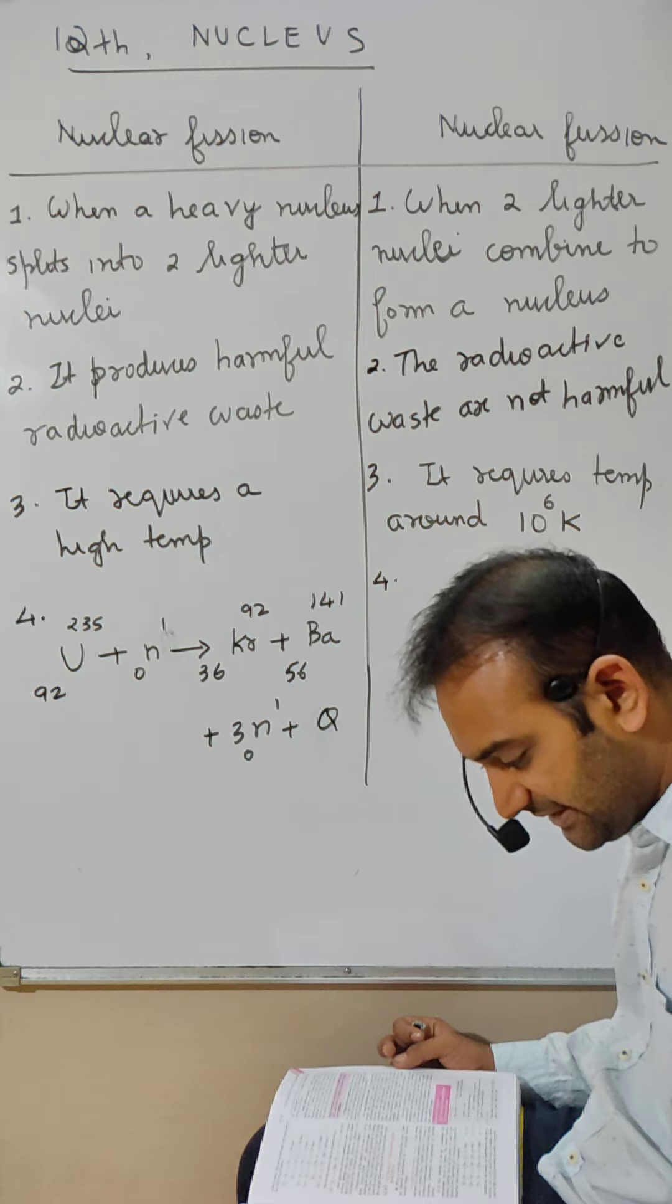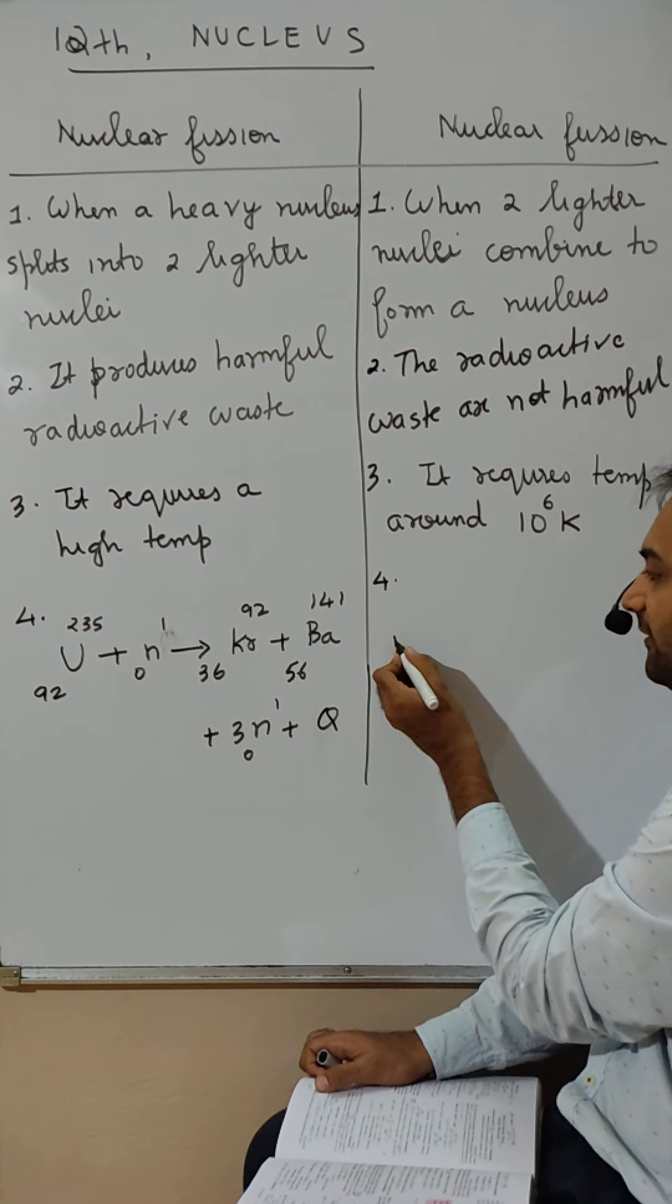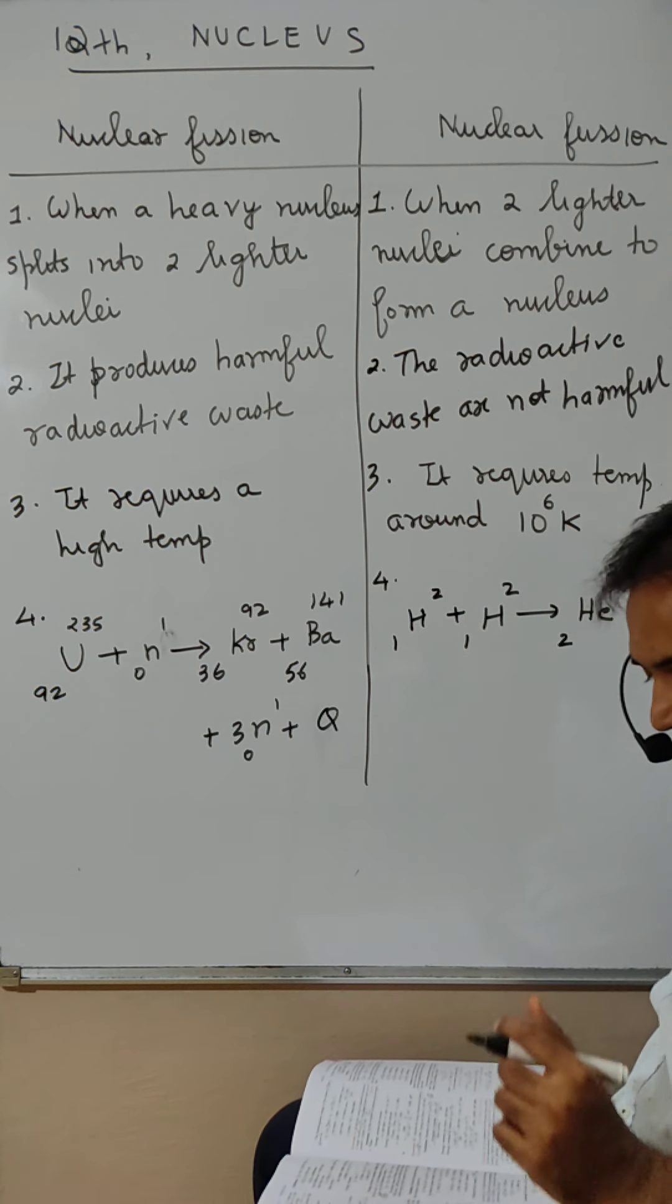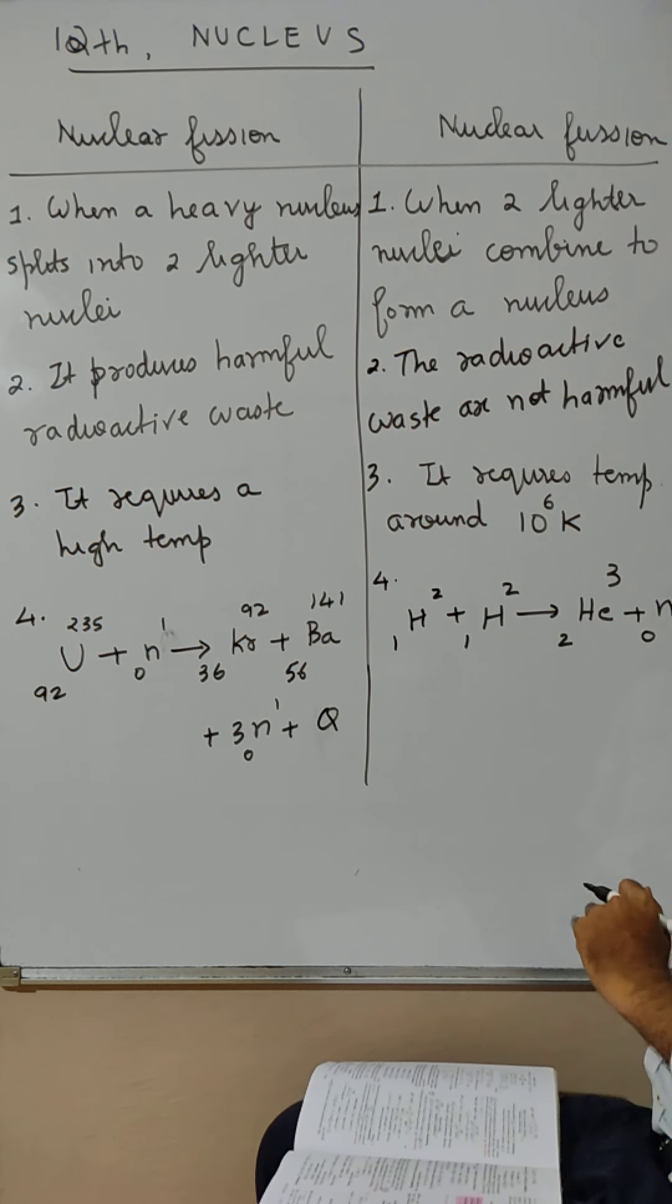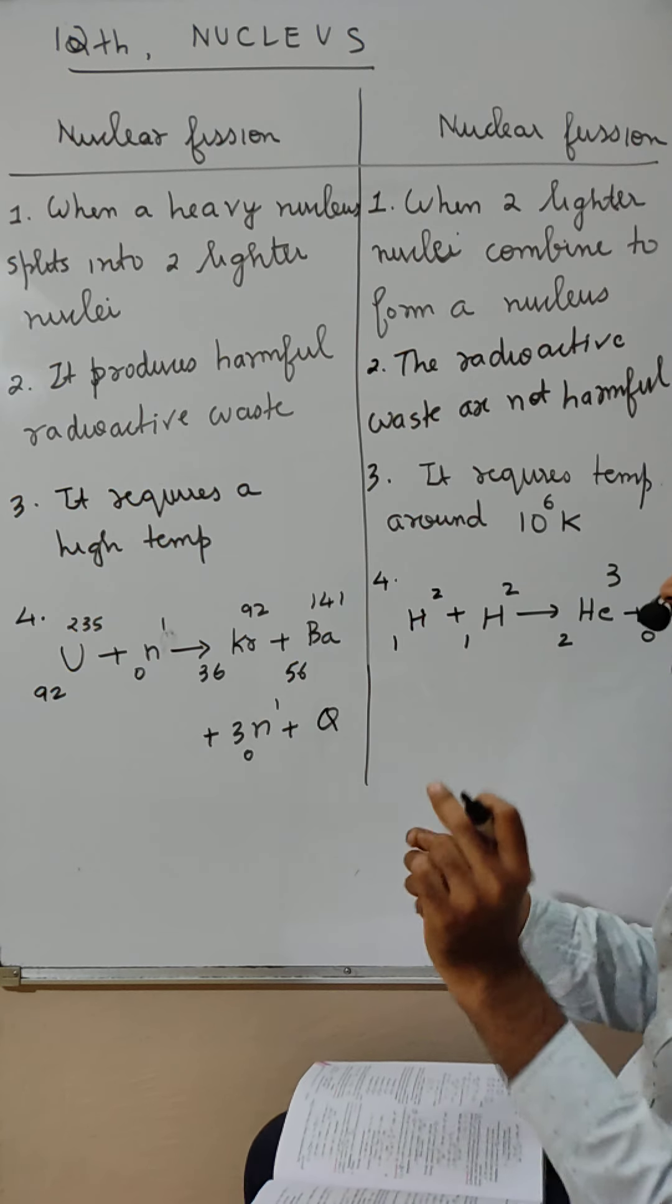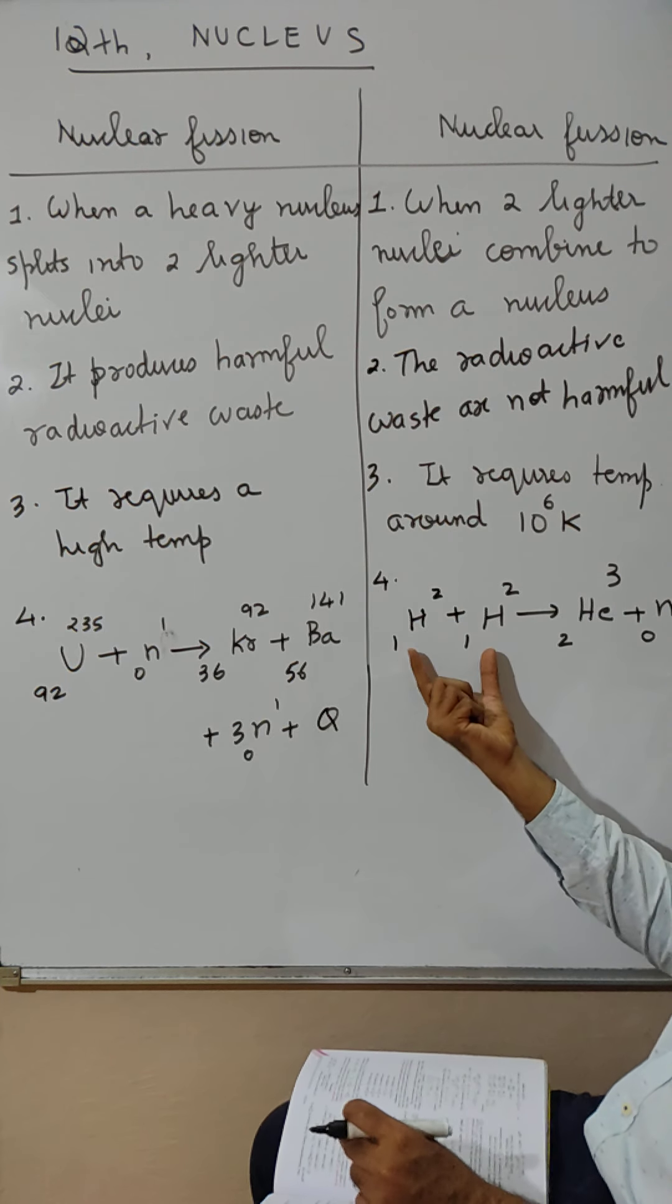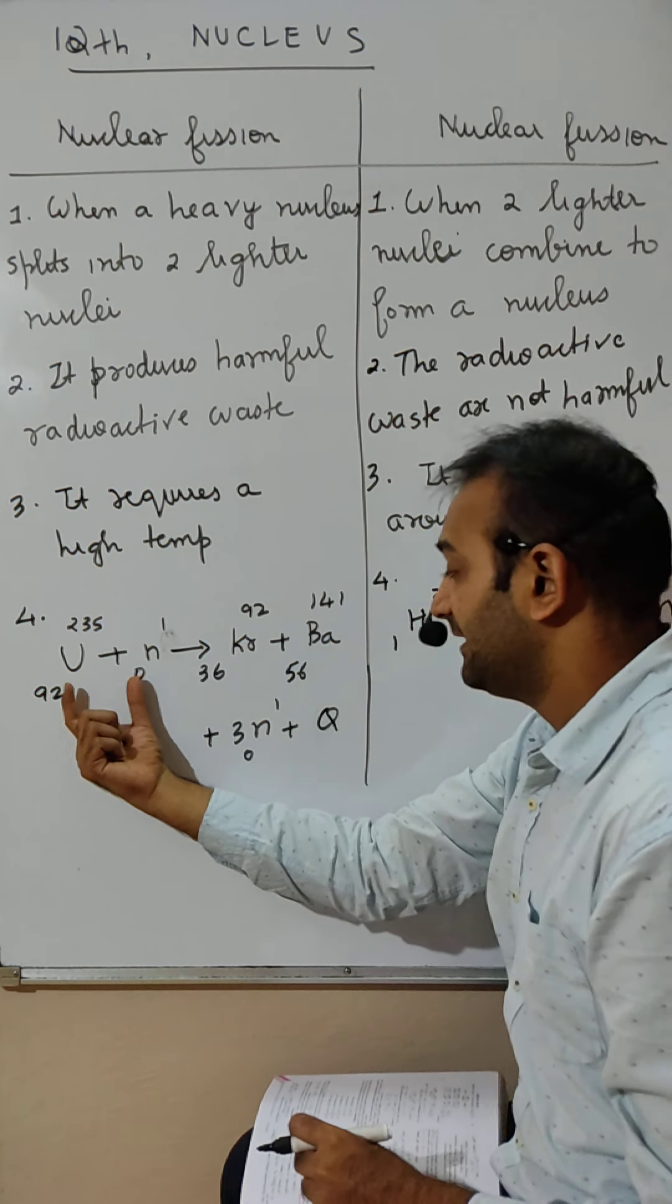There are many different reactions in the proton cycle. 1H2 plus 1H2 combines to give helium. This is one of the fusion reactions. Fusion means two light nuclei combine to form a nucleus. Two become one, that is fusion. And here one becomes two, that is fission.